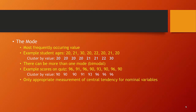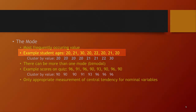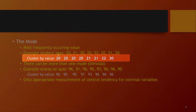The mode is simply the most frequently occurring value in a distribution. For example, if you had a random set of student ages — 20, 21, 30, 20, 22, 20, 21, 20 — and you clustered them by the number of 19-year-olds, 20-year-olds, 21-year-olds, 22-year-olds, etc., you could quickly see the most frequently occurring value. The mode is 20.